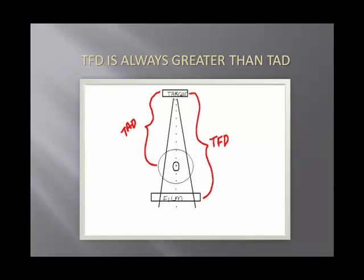Target-to-film distance is always greater than target-to-axis distance. In the diagram, the target is at the top and the film is at the bottom, so TFD is obviously always larger than TAD. Any object on the film is going to appear larger because of divergence of the X-ray beam. If you look at an object in the patient, or even sitting on top of the patient with the film behind, the X-ray divergence will project that image larger onto the film.